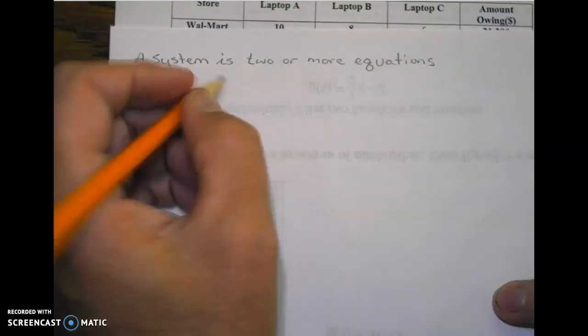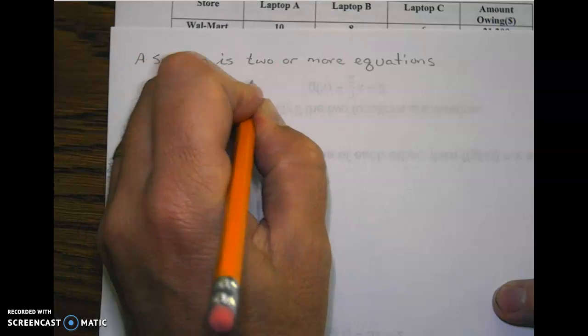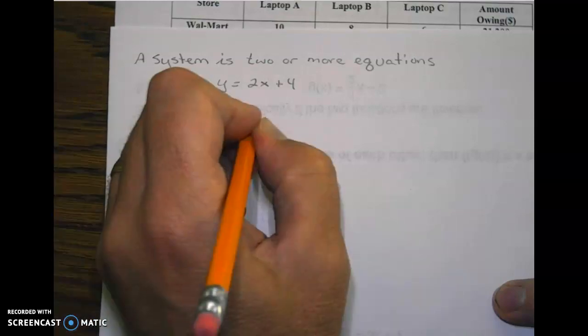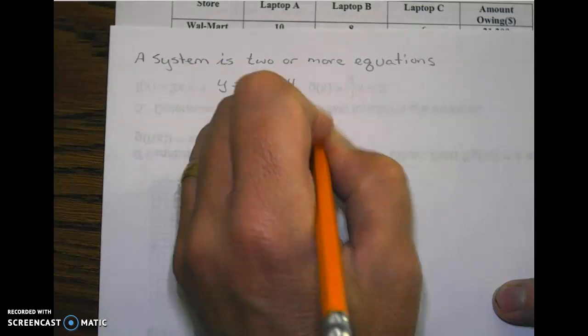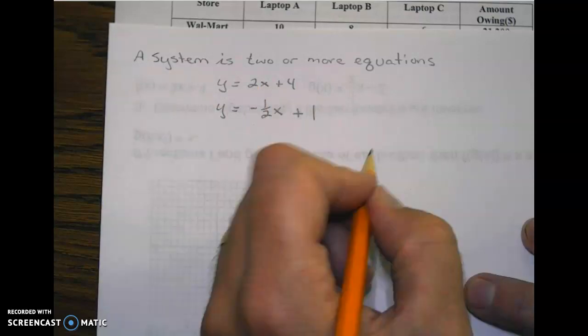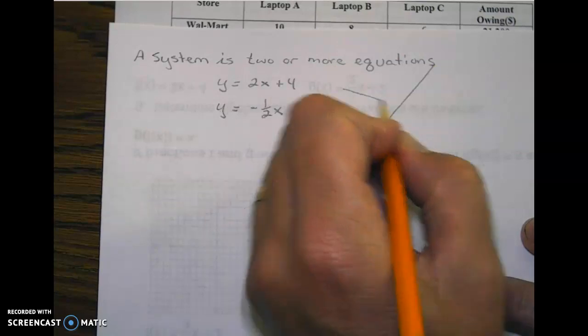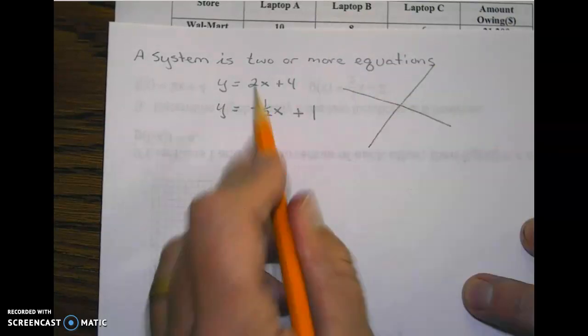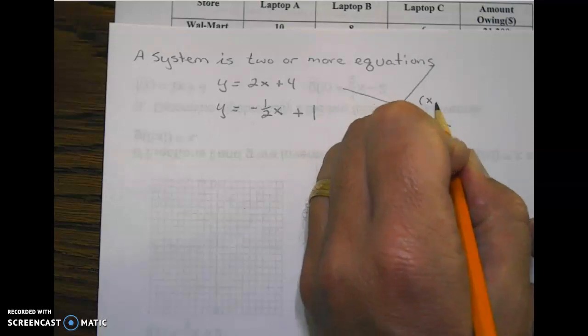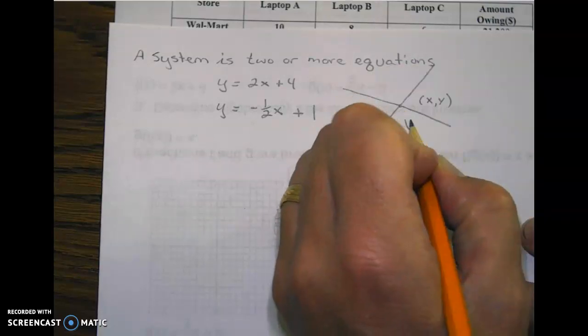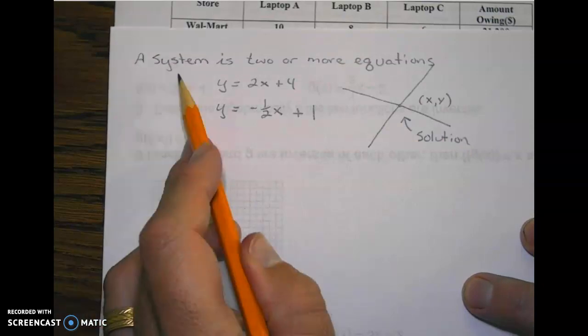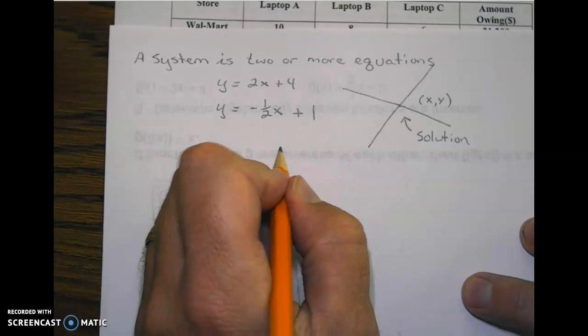For example, y equals 2x plus 4 and y equals negative one-half x plus 1. When we would graph these two lines, we get two graphs and the solution to the system was where they intersected. That was the solution. You should have learned how to set up a system and how to solve a system using substitution.